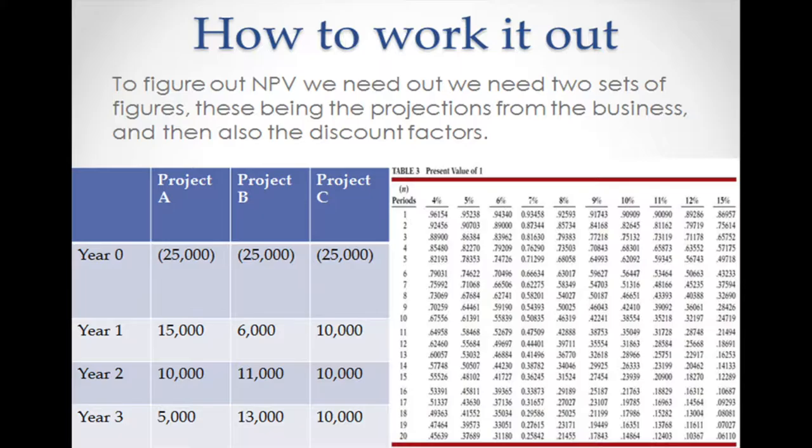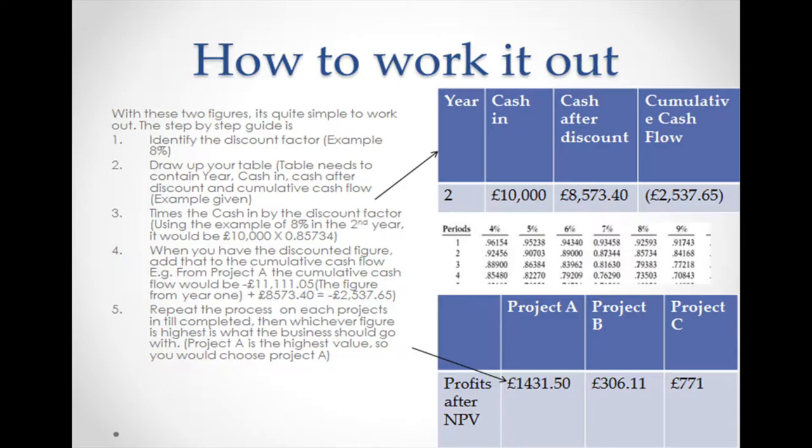The process of working net present value out is quite simple. We need two key sets of figures: one being your business's projections in terms of valuation, and a set of discount factors. With these figures you need to set up tables, with the years of the period to be measured on the left, followed by the expected cash flow or incomings for those years, then the discounted cash flow, and finally the cumulative cash flow.